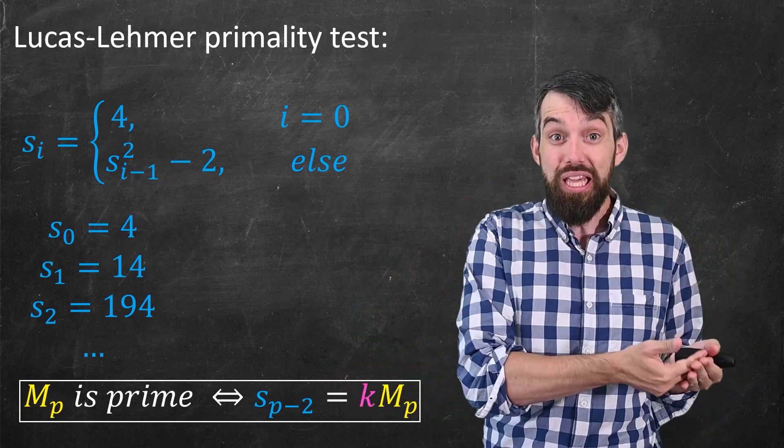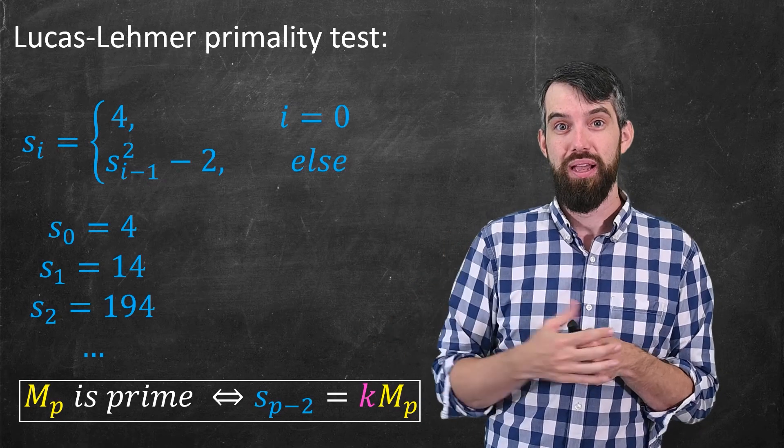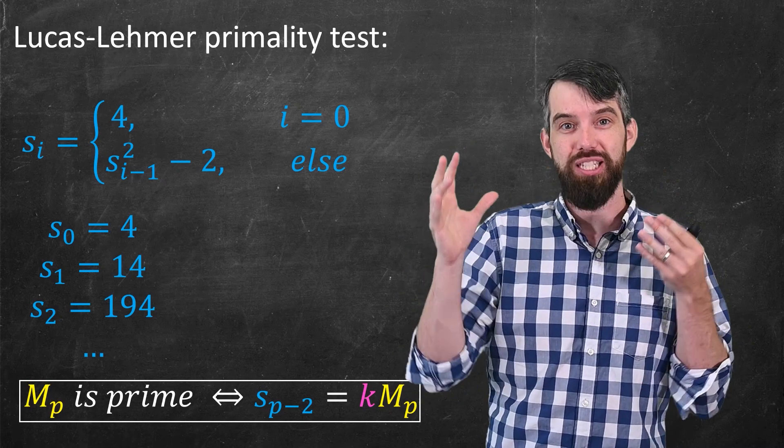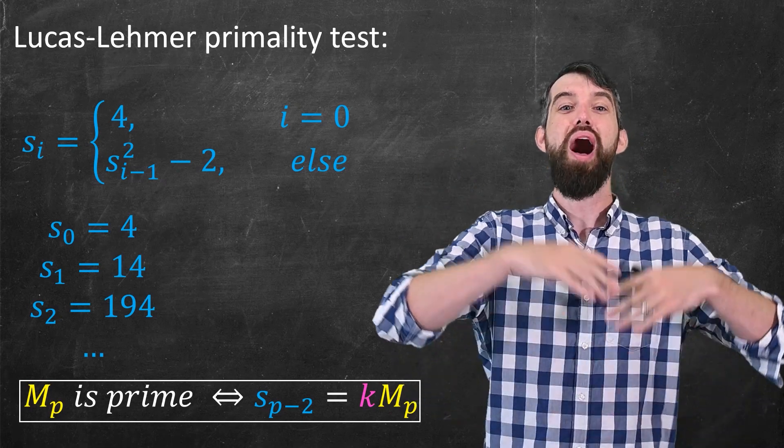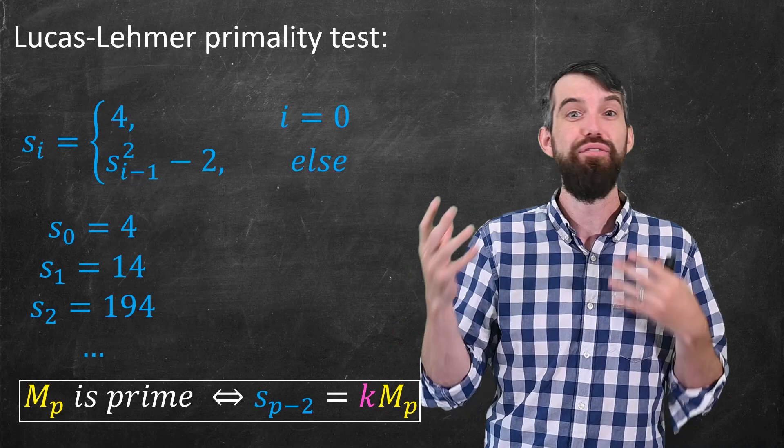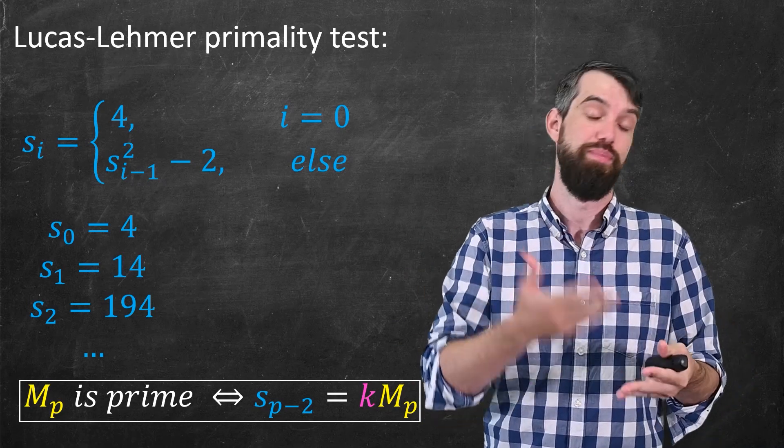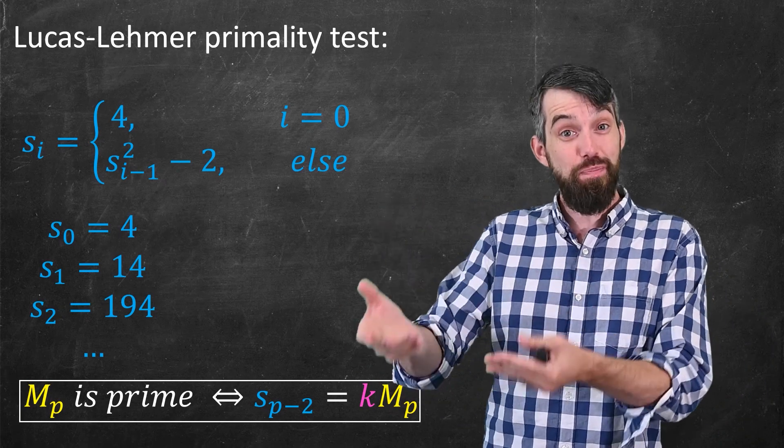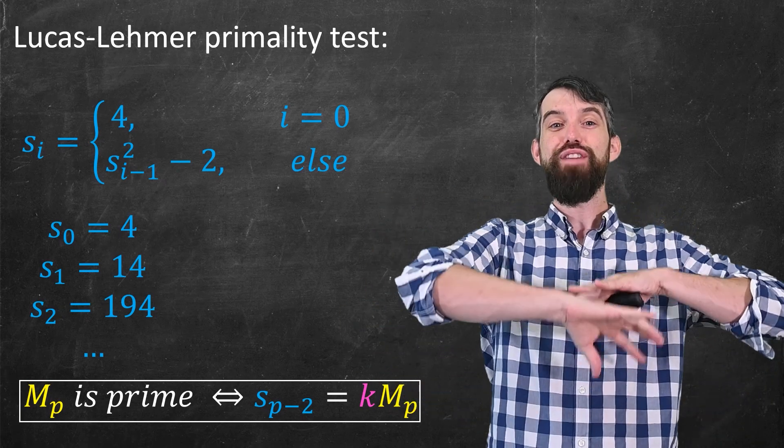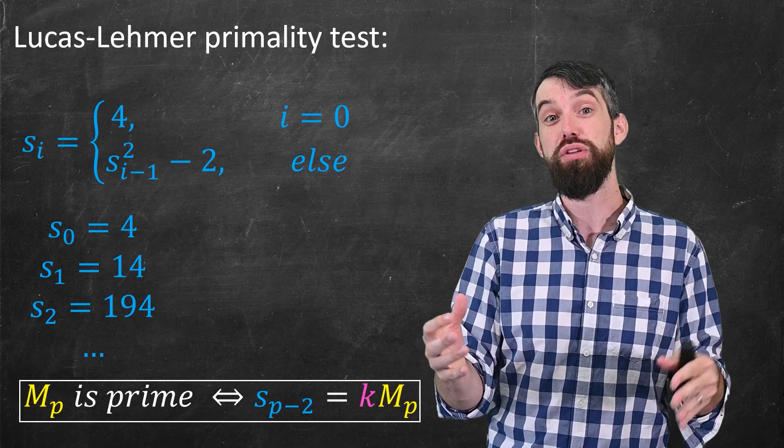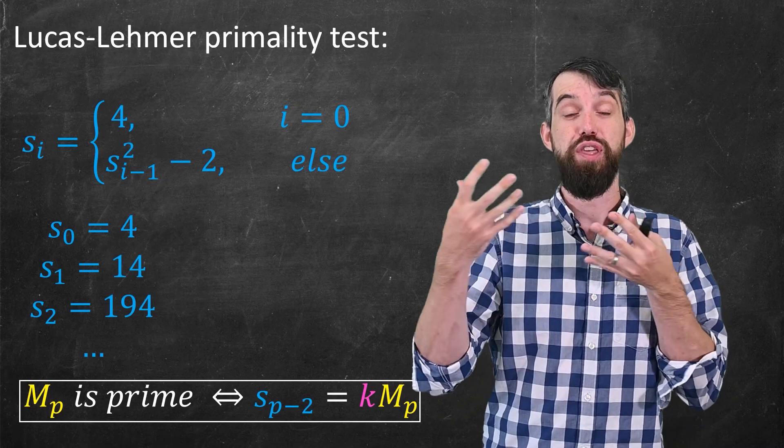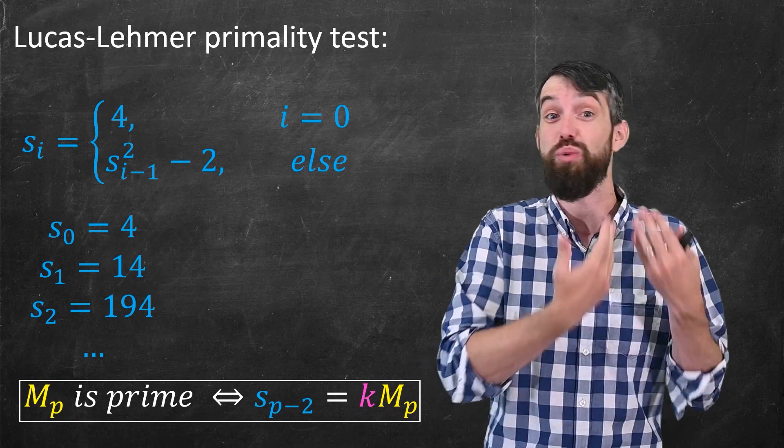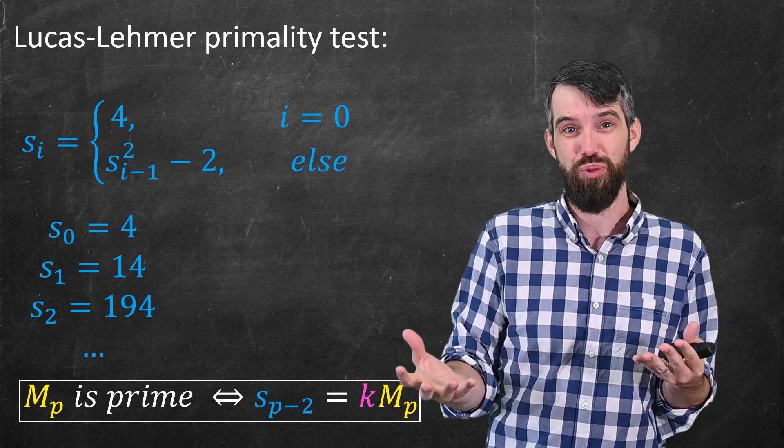Now, remember for us, our p was some number like 82 million. So the sequence has 82 million terms in it. It's still extremely computationally expensive. The terms become unfathomably large because every single time you're squaring it, that's subtracting 2, but the squares make it really, really large. And then there's a computationally expensive test to see, is this unfathomably large number actually just a multiple of the Mersenne number, the M_p, which itself is, again, an unfathomably large number with 24 million decimal places.